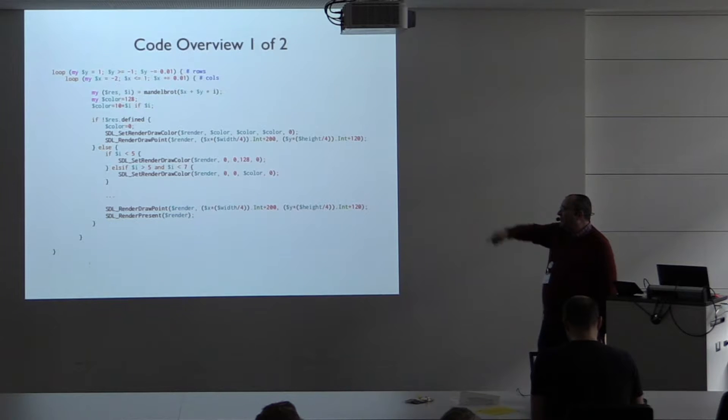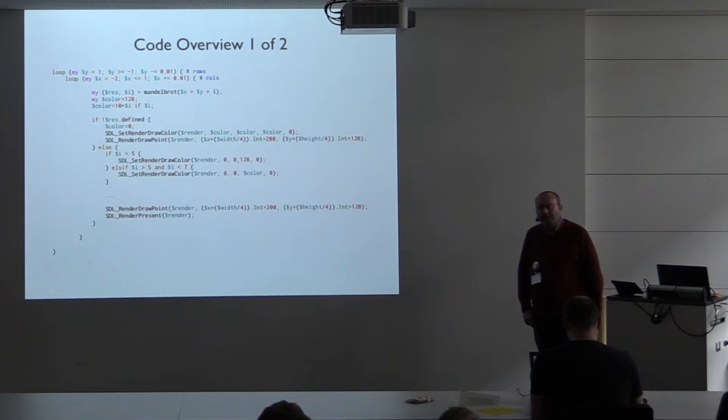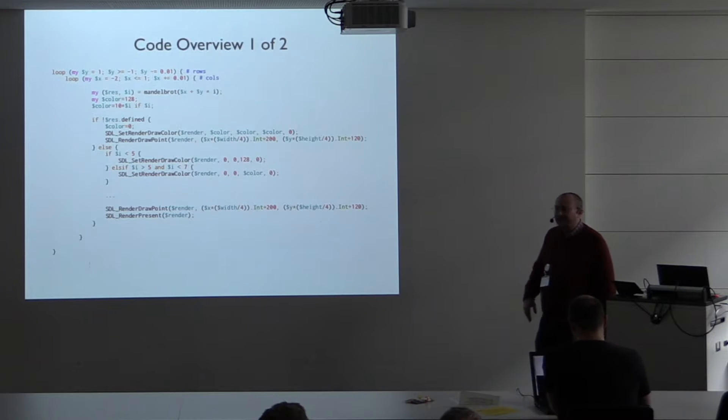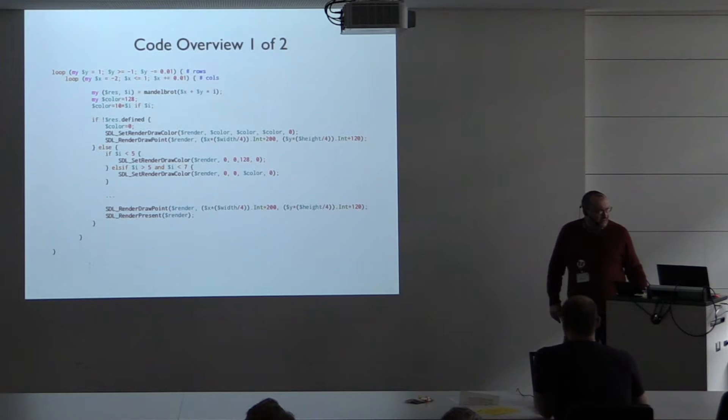It would probably have been better if I'd thought about this more and done proper shading. But I just wanted something up and running quite quickly. The actual SDL calls there are pretty much directly calls into the C library. The library that I used is SDL2 raw, which, as its name suggests, is basically just a raw interface to the C functions. I just draw a point and then render the point.